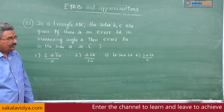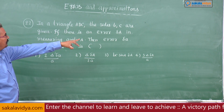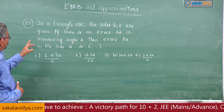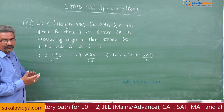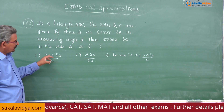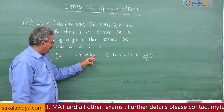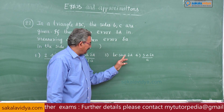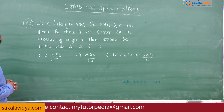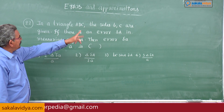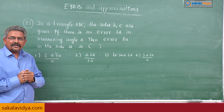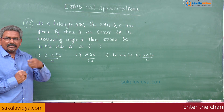Twenty-second problem. In triangle ABC, the sides b and c are given. If there is an error δA in measuring angle A, find the error δa in side a. We apply the cosine rule since b and c are given and side a is changing: a² = b² + c² − 2bc cos A.